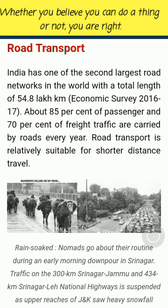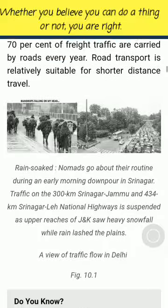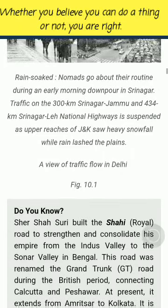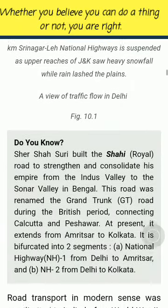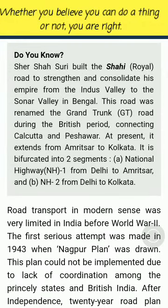Road transport is relatively suitable for shorter distance travel. Traffic on the 300 km Srinagar-Jammu and 434 km Srinagar-Leh National Highways is suspended as upper reaches of J&K saw heavy snowfall while rain lashed the plains. Do you know? Sher Shah Suri built the Shahi (Royal) road to strengthen and consolidate his empire from the Indus Valley to the Sona Valley in Bengal. This road was renamed the Grand Trunk (GT) road during the British period, connecting Calcutta and Peshawar.